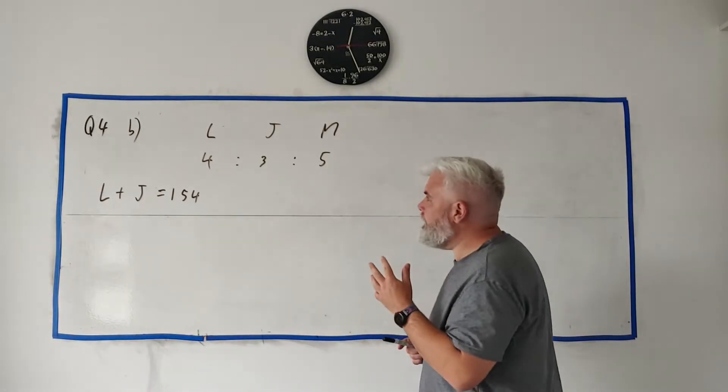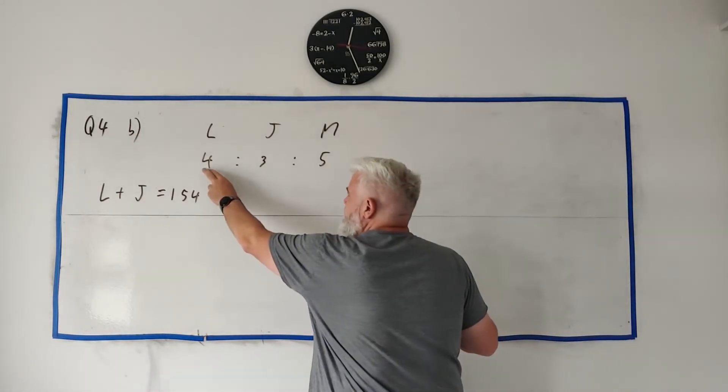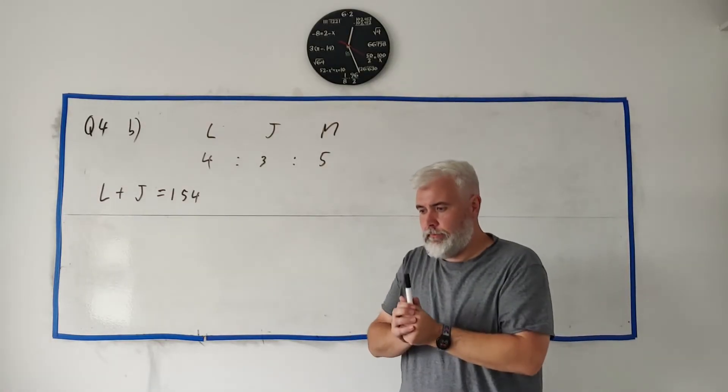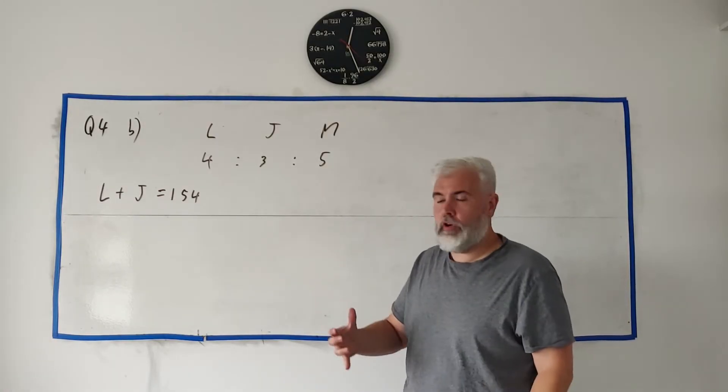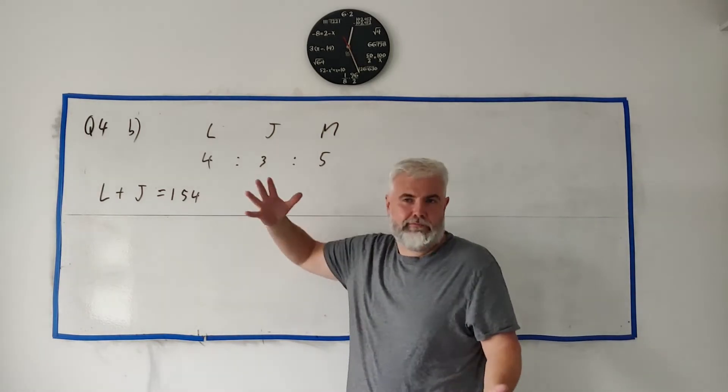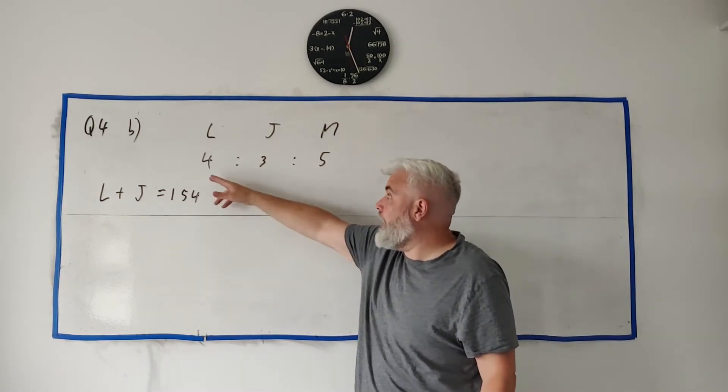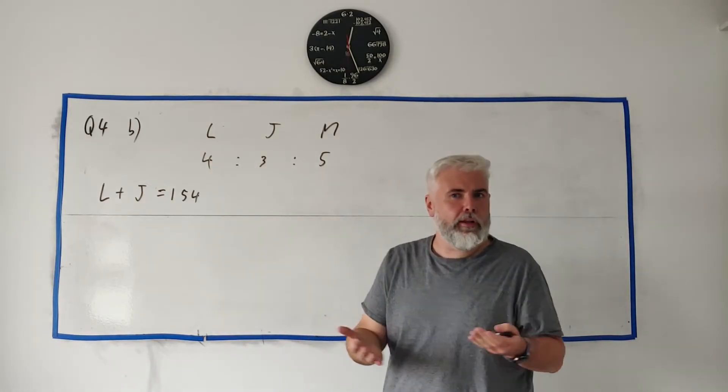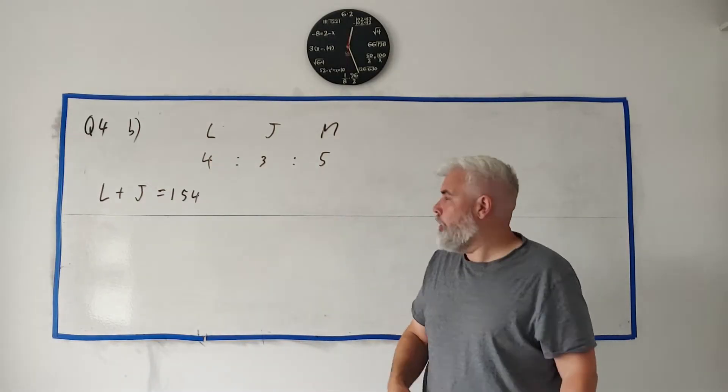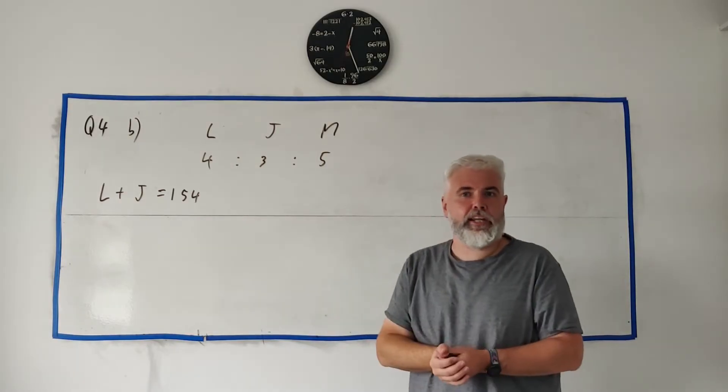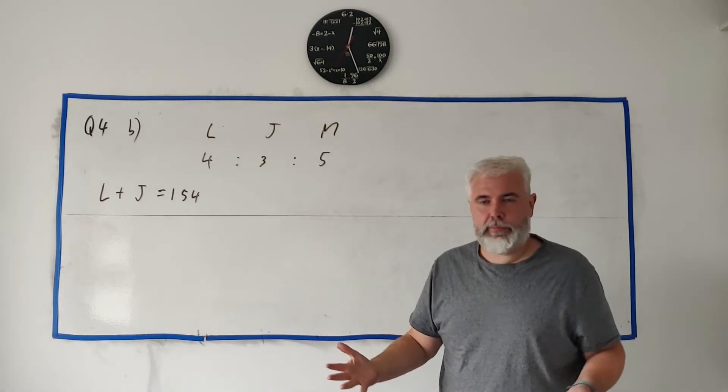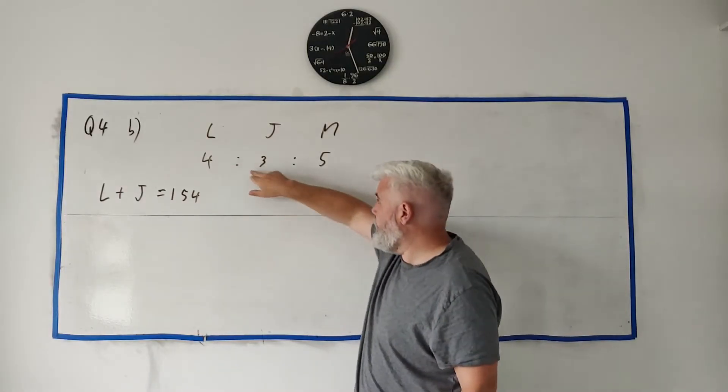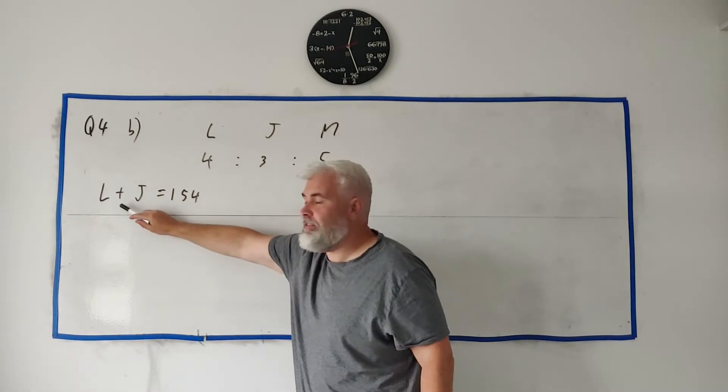What they did tell you here was what Liam and John paid together, they paid 154 euro. So how do you solve this? The way to think of this is these numbers here as packets, as small bits of money. It could be like Liam pays four packets, each packet's worth 5 euro, or 50 euro. We need to find out what one of these packets is worth.